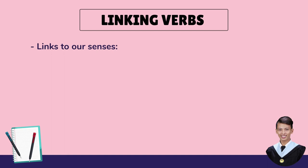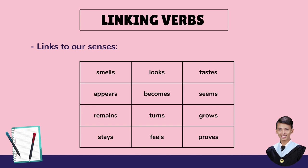We still have some other examples of linking verbs, and most of them are linked to our senses. Examples: smells, looks, tastes, appears, becomes, seems, remains, turns, grows, stays, fills, and proves.